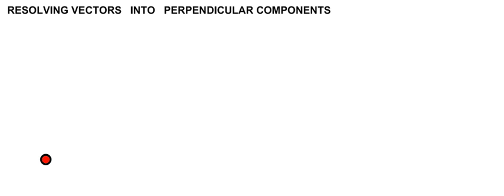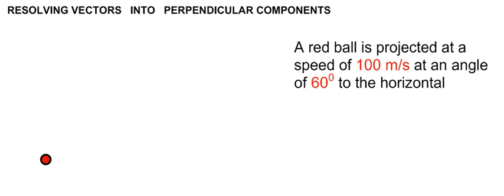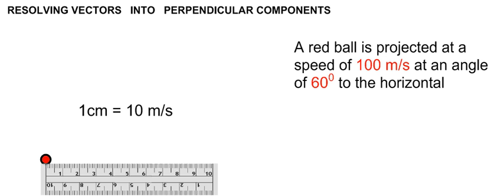We will now revise resolving vectors into perpendicular components. We shall consider resolving a velocity vector into horizontal and vertical components, specifically a velocity vector of 100 meters per second acting at 60 degrees above the horizontal. The size of the velocity vector can be shown using a scaled arrow, using a scale of 1 centimeter equal to 10 meters per second to represent the 100 meters per second vector with a line 10 centimeters long.